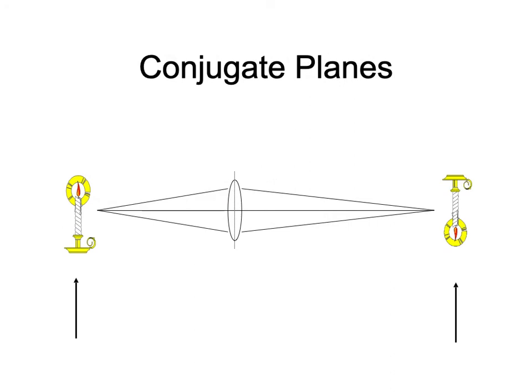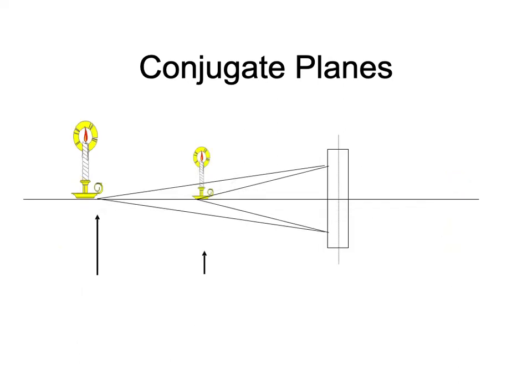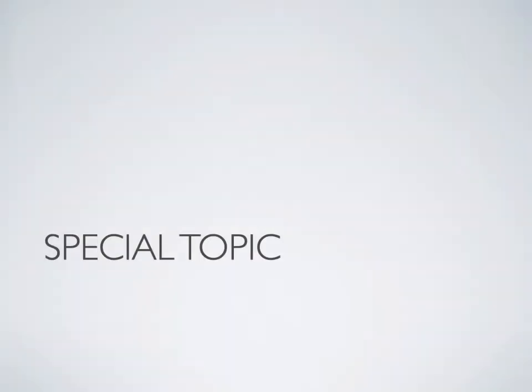Conjugate planes is also a very easy concept. If we substitute another thing for that candle on the left, it would still image on the right in the same place. If we took out the candle and put in a lizard, we would get an image of a lizard on the right. What's magical is the planes — these are called conjugate planes.